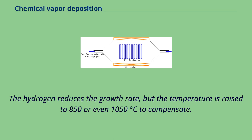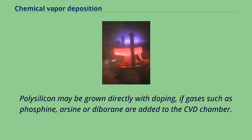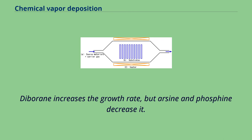Polysilicon may be grown directly with doping, if gases such as phosphine, arsine, or diborane are added to the CVD chamber. Diborane increases the growth rate, but arsine and phosphine decrease it.